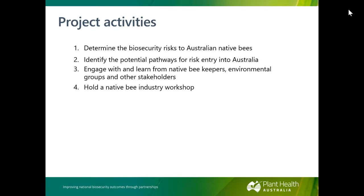The project has four main activities. First, I'm currently conducting a literature review to determine biosecurity risks to all Australian native bee species — including stingless bees but not limited to them — looking at pests and diseases across Apidae, Colletidae, Halictidae, and Megachylidae, and also pests and diseases of other insect groups like ants, wasps and beetles that have been recorded to affect bees overseas. It's important we include these because a number of viruses affect species across taxa.